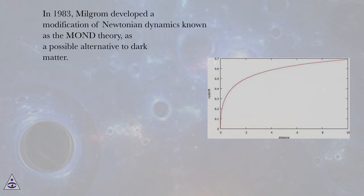In 1983, Milgrom developed a modification of Newtonian dynamics known as the MOND theory, as a possible alternative to dark matter.